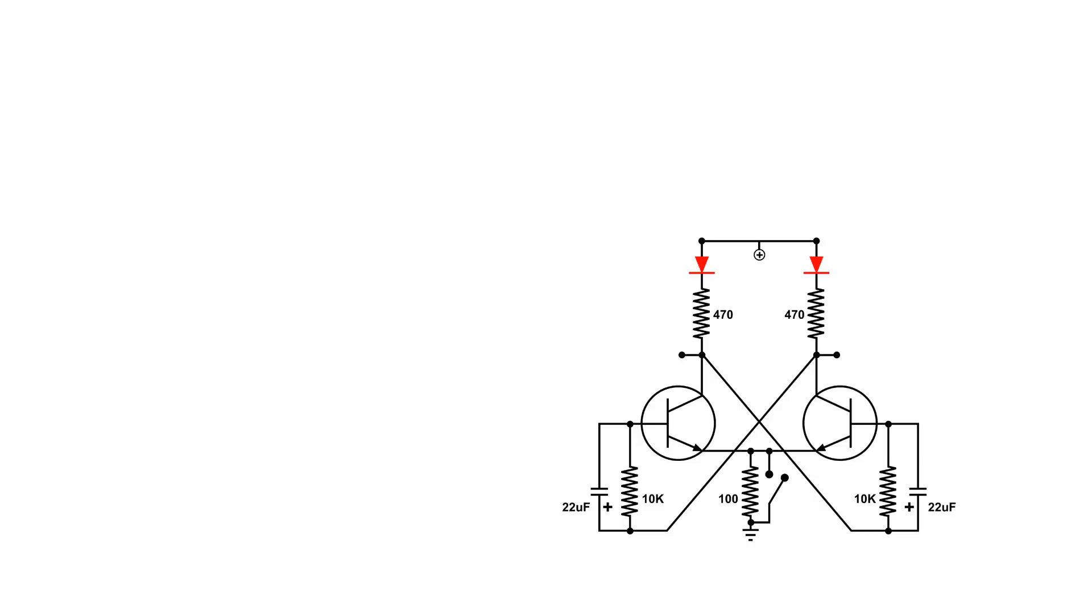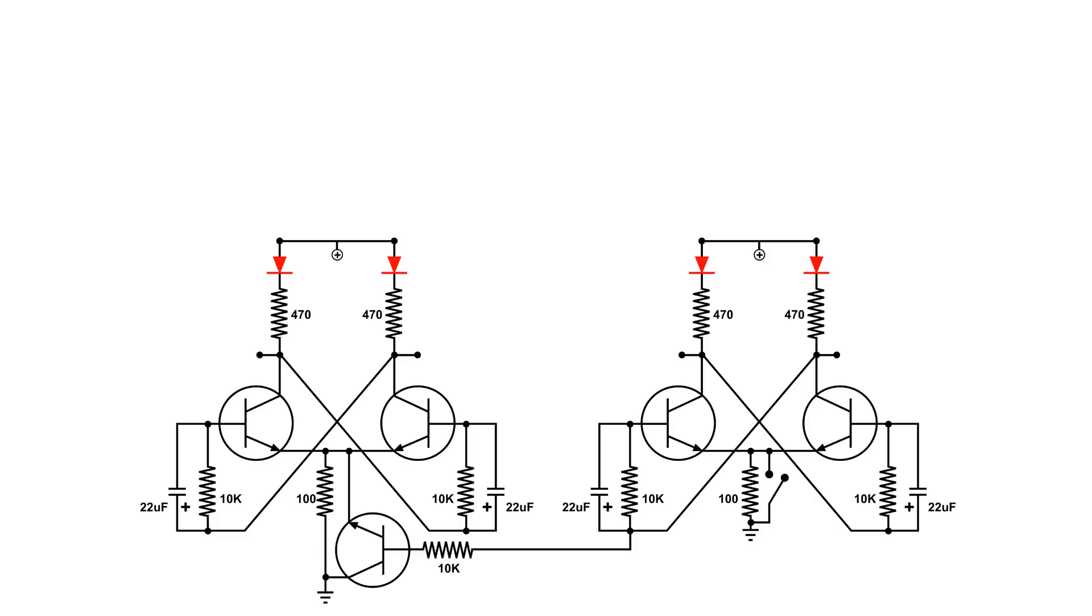Once I got this flip-flop working, then I built an identical one. And then figured out a way of linking the two together, which is that transistor at the bottom so that they are cascaded together. In other words, on the right, that 100 ohm resistor, there's a switch there. When I operate the switch, that flip-flop will toggle back and forth. And at the right time, it will also cause the left flip-flop to toggle. Now the right flip-flop will toggle exactly twice as fast as the left flip-flop circuit.